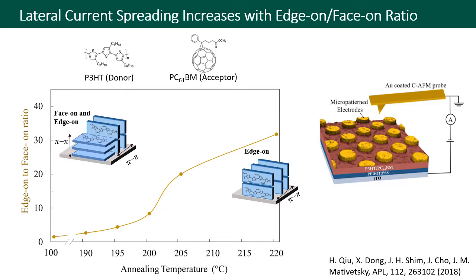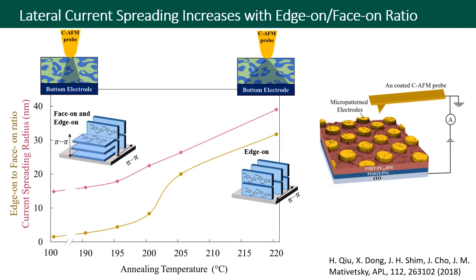We then used a new conductive atomic force microscope approach to quantify the lateral current spreading during out-of-plane charge transport. Briefly, it involves depositing an array of micro-patterned electrodes on the active layer and then comparing the current when the probe is in direct contact with the film, which leads to current spreading, versus when the probe is in contact with a micro-electrode, which leads to little spreading relative to the micro-electrode size.